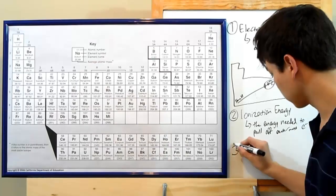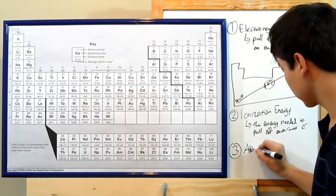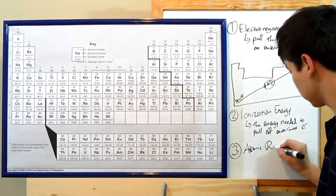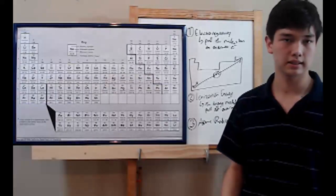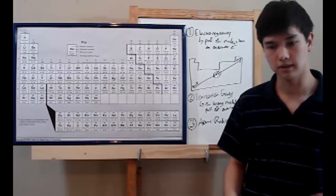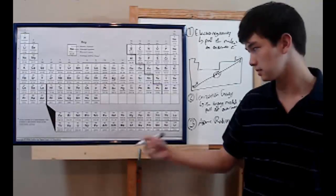The third trend you'll need to remember is atomic radius. The term speaks for itself. The atomic radius is just how much distance there is from the middle of the atom in the nucleus to the furthest part outside.